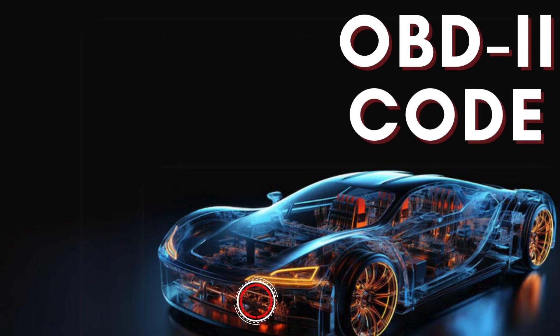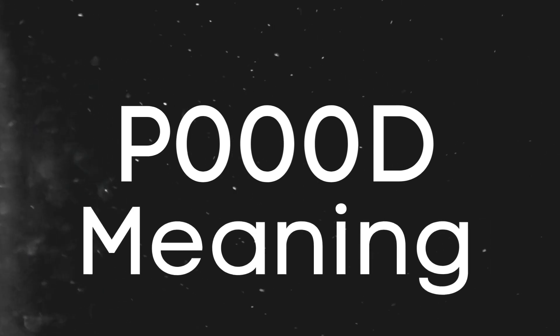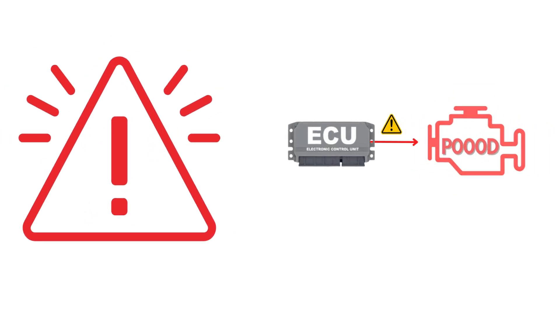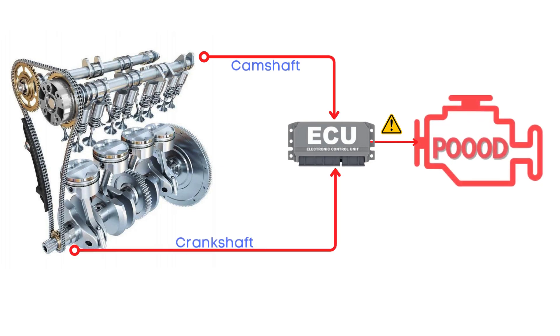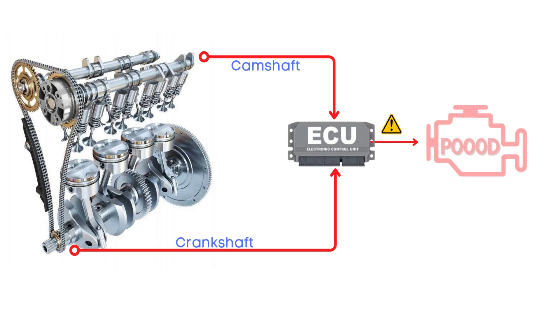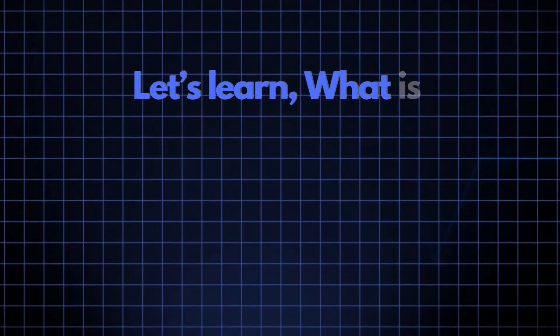In today's video, we're diving into everything you need to know about OBD-II Trouble Code P000D. First things first, let's break down what the P000D code actually is. This code gets triggered when the engine control module detects that the camshaft isn't properly aligned with the crankshaft. Specifically, the P000D code points to an issue with the exhaust camshaft sensor on bank 2.